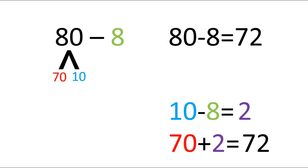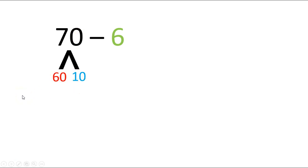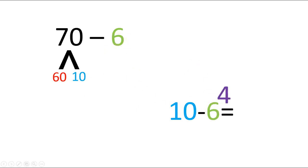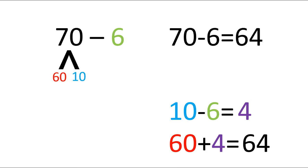Give yourself a kiss on the brain if yours looks like mine. Go ahead and push pause and then push play when you're done answering this one. So when you broke up the 70, did you have the 60 and the 10? And then what was your first number sentence that you wrote down here? Did you write 10 minus 6? What is 10 minus 6? 4. Very good. Now your next number sentence was 60 plus 4. What did you write down as 60 plus 4 equals? 64. Very good. So 70 minus 6 equals 64.